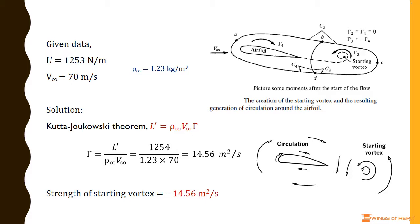So, we can write L' equals ρ∞ times V∞ times Γ, where L' is the lift per unit span, ρ∞ is the density of the flow, V∞ is the freestream velocity, and Γ is the circulation.